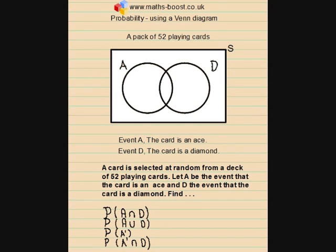We're going to look at a probability problem that we're going to solve using a Venn diagram. The scenario is we've got a pack of 52 playing cards and we're going to select a card at random and find the probability of various scenarios. We've got a Venn diagram here with the sample space represented by this rectangle, and within the sample space are all 52 possible outcomes.